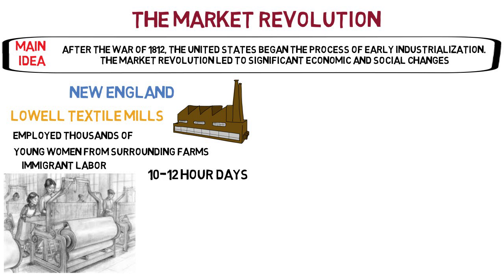Lowell hoped to avoid the uglier aspects of industrialization and offer a model for the rest of the country to follow. In the mills, young women worked 10 to 12 hour days. The factory girls, as they were called, were also encouraged to take classes, attend church, and they were strictly supervised in a dormitory-like setting. Despite these intentions, many critics observed how workers were often exploited and suffered a variety of work-related ailments, which led to calls for labor reform that would continue throughout the 19th and 20th centuries.